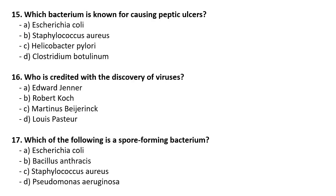Which bacterium is known for causing peptic ulcer? Helicobacter pylori is the correct answer. Who is credited with the discovery of viruses? The correct answer is Martinus Beijerinck. Which of the following is a spore-forming bacteria? The answer is Bacillus anthracis — most Bacillus species are known as spore-forming.